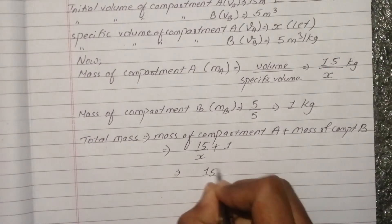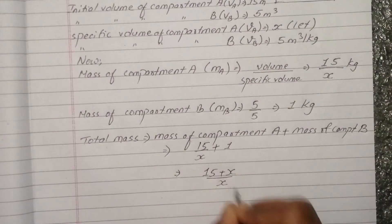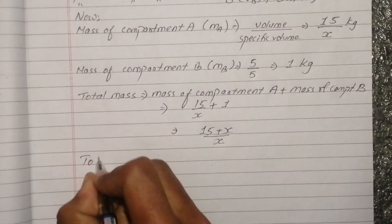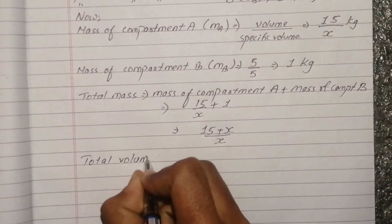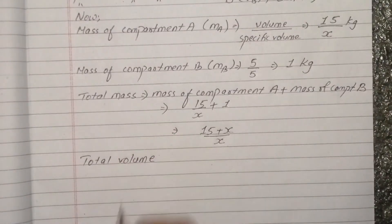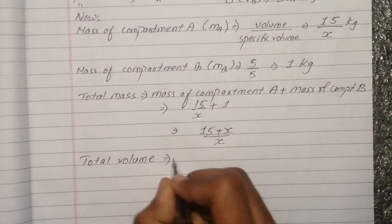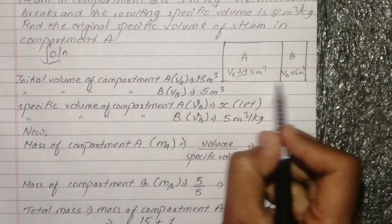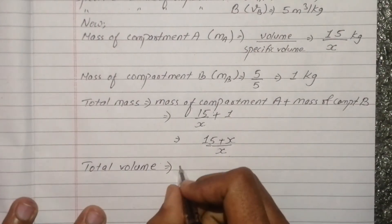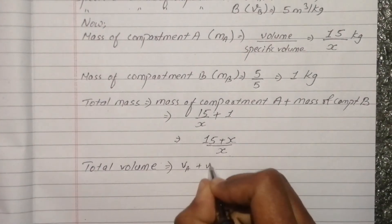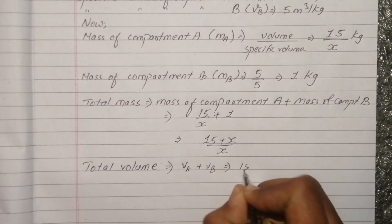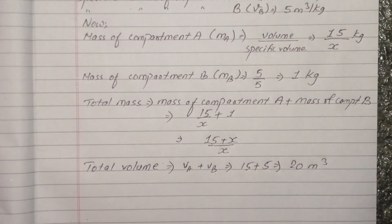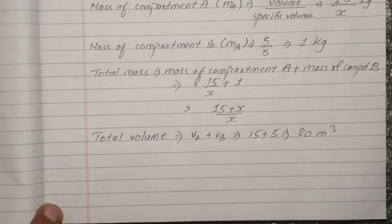Total mass equals 15 plus x over x. Total volume equals volume A plus volume B — that is 15 plus 5, which equals 20 meter cube.